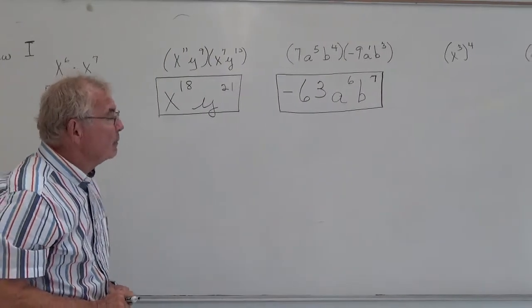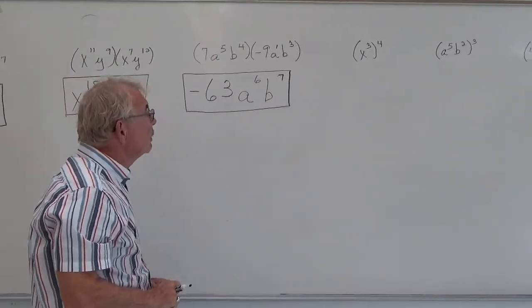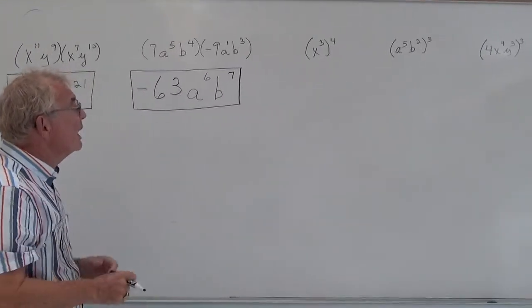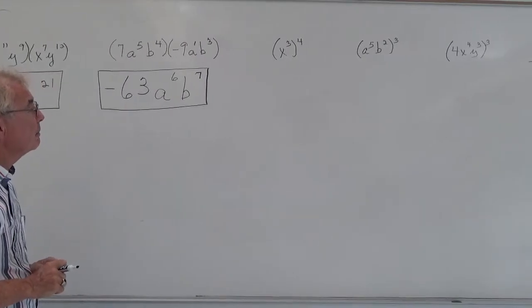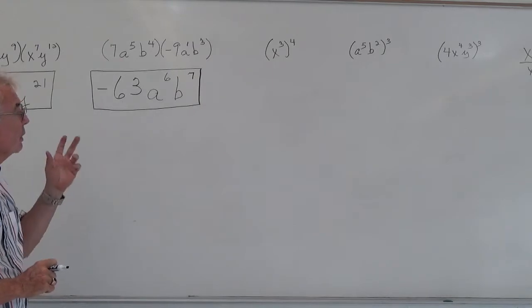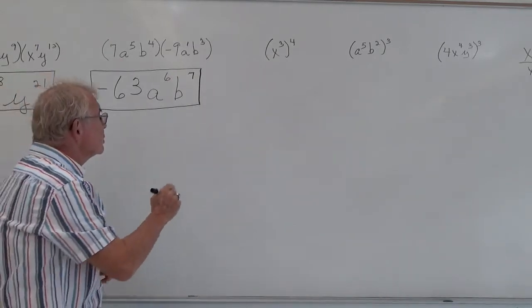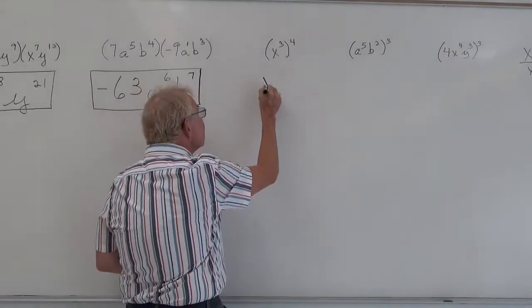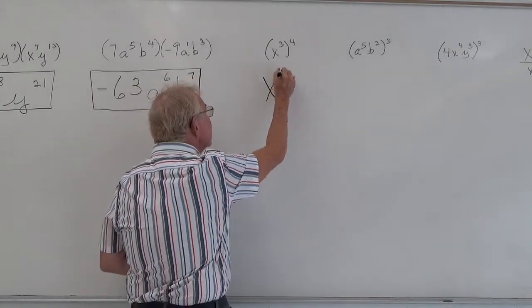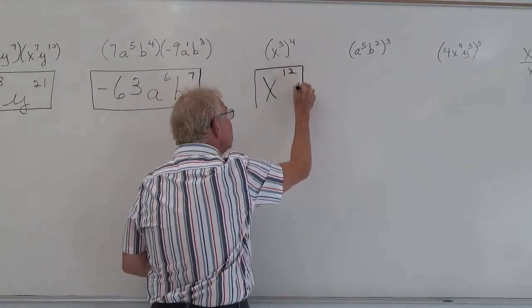Our next example goes to rule 2, sometimes called the power exponent, where you have x to the 3rd raised to the 4th power. So on this rule that we derived from the previous lesson, we learned that we would multiply these exponents. So it's x, 3 times 4 is 12. So in this rule, we multiply.